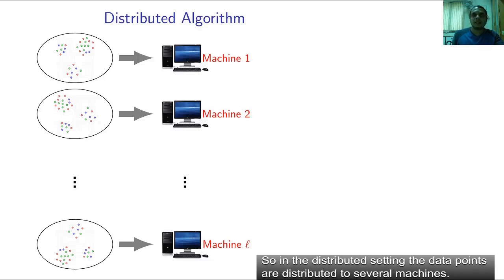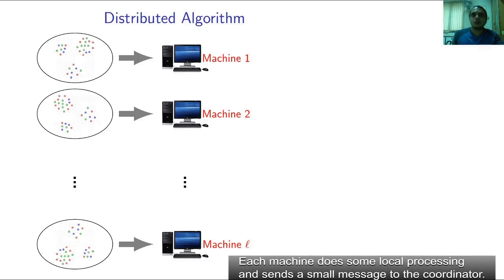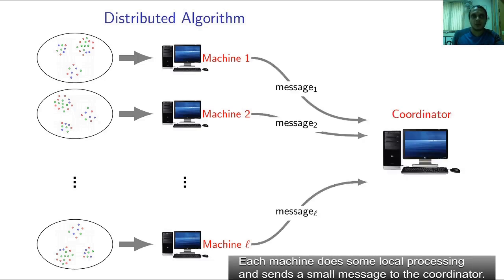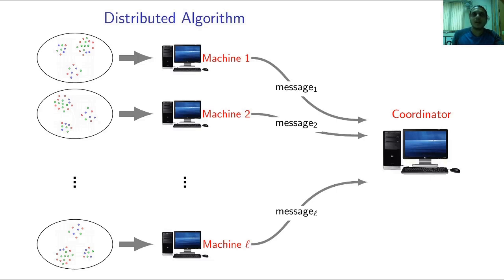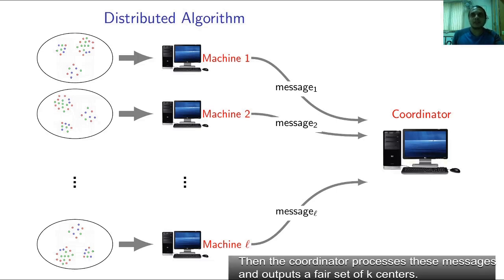So in the distributed setting, the data points are distributed to several machines. Each machine does some local processing and sends a small message to the coordinator. This message contains a small subset of points from the data that each machine has. Then the coordinator processes these messages and outputs a fair set of k centers.